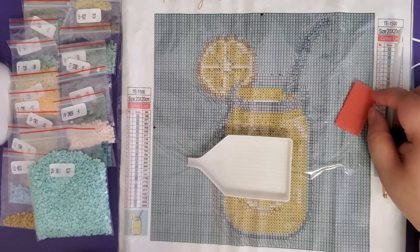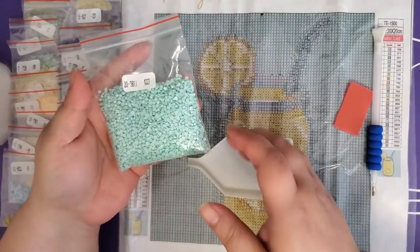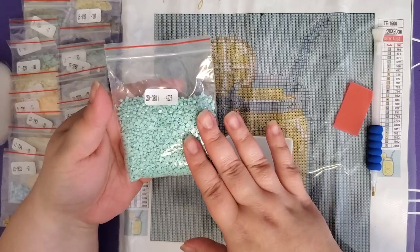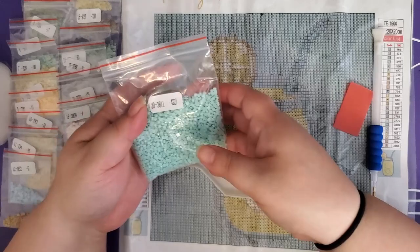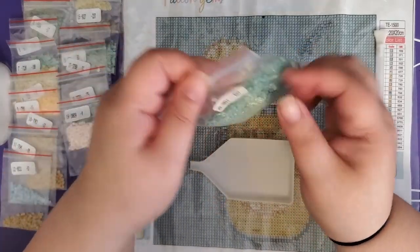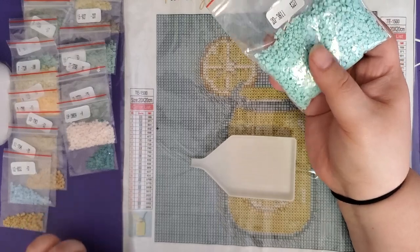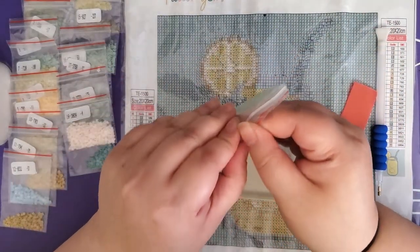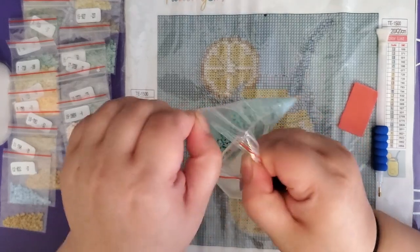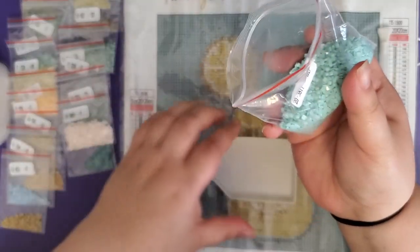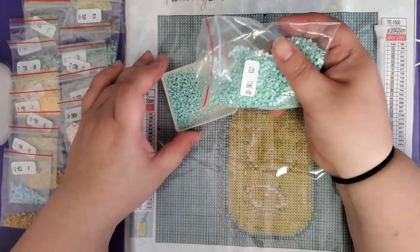So next, what we will want to do is grab the bag of the color drills that we picked out. So see number 20, and then it's number 20 on the legend. And then we will go ahead and plop these into the tray.